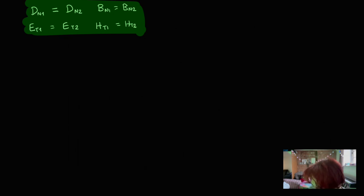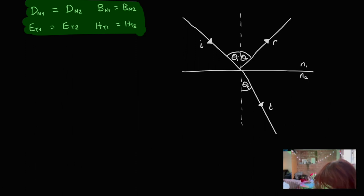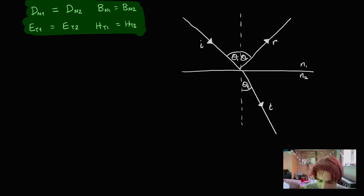Let's go ahead and redraw our diagram for a ray which is coming in at an angle upon a boundary between two different dielectric media. When we think back to what we said about electromagnetic waves, the direction of propagation for the incident wave is in this particular direction. We said that both the electric and magnetic fields were at right angles to this direction, but they were also right angles to each other.